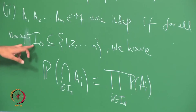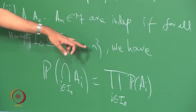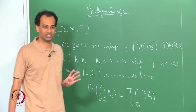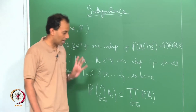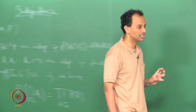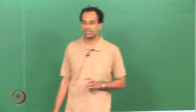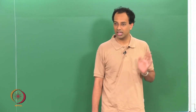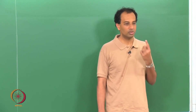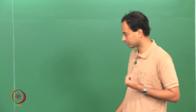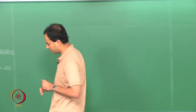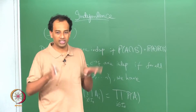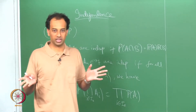There are 2^n possible subsets of {1, ..., n}, but one of them is empty and the singletons lead to trivial equations. So you have to actually verify 2^n minus n minus 1 equations to assert that A1 through An are independent; even if one of them fails to hold, they are not independent. For example, you can create examples of 3 events which are all pairwise independent — A1 and A2 independent, A2 and A3 independent, A3 and A1 independent — yet they may not all be independent.